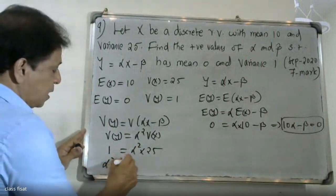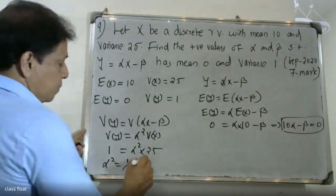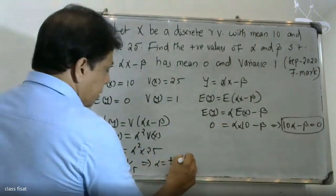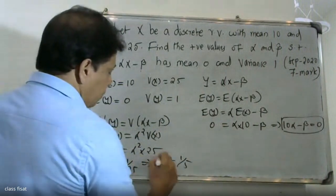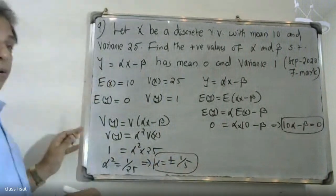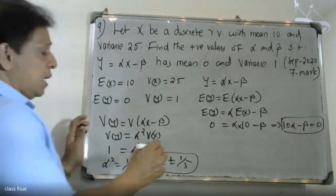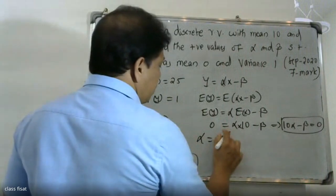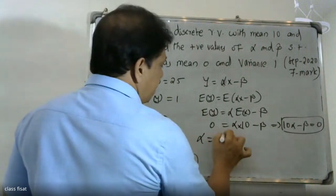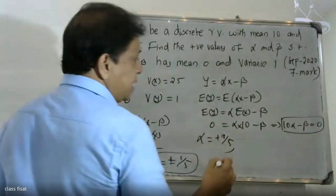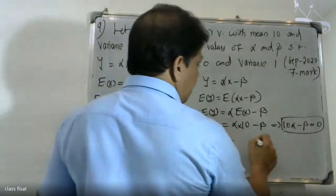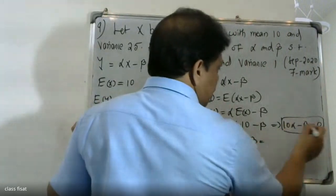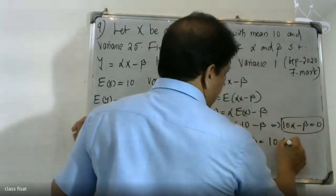Therefore, alpha squared equals 1 by 25. Taking the square root, alpha equals plus or minus 1 by 5. Since we require the positive value, alpha equals plus 1 by 5.